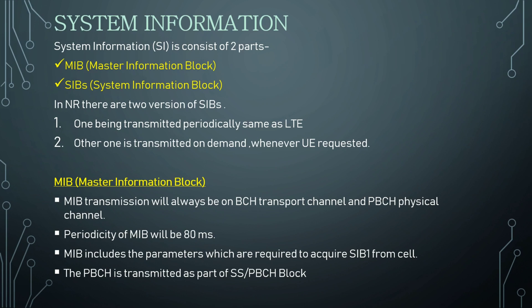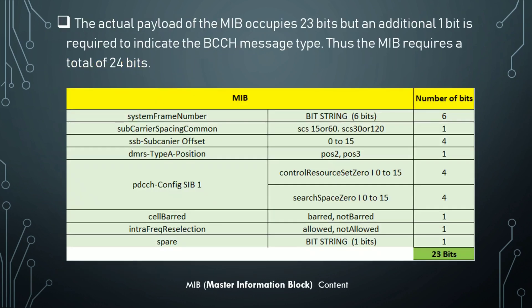Master Information Block transmission will always be on the BCH transport channel and PBCH physical channel. The periodicity of the Master Information Block is 80ms. The MIB includes parameters required to acquire SIB1 from the cell, and the PBCH is transmitted as part of the SS/PBCH block.